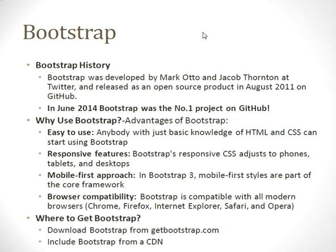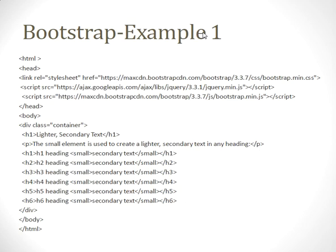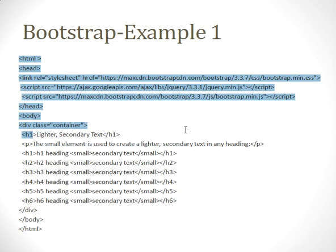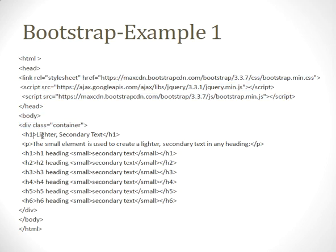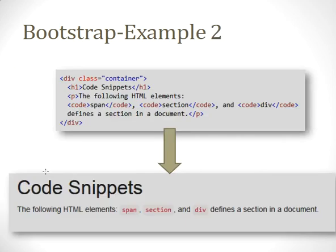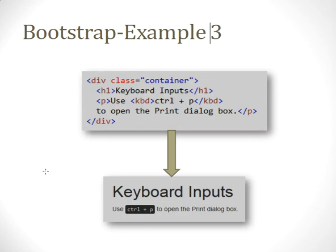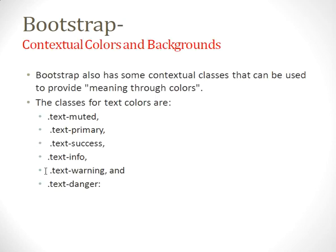Bootstrap can be downloaded from getbootstrap.com. Advantages include: easy to use, responsive features, mobile-first approach, and browser compatibility. A simple Bootstrap example involves an HTML file that includes bootstrap.min.css, jquery.min.js, and bootstrap.min.js — these three files are included to run Bootstrap code. A second example uses HTML elements including a span section and keyboard input with the kbd tag, such as Ctrl+P to open the print box.